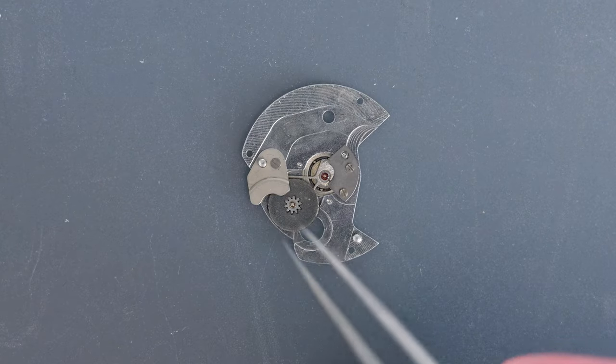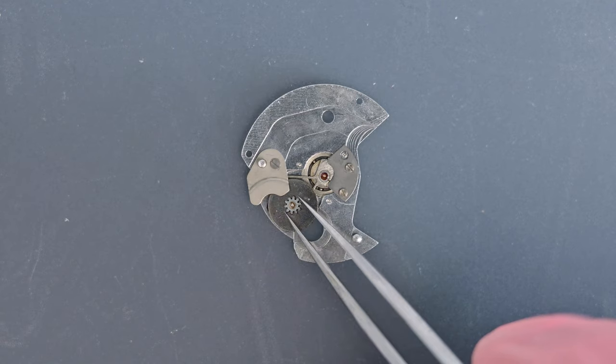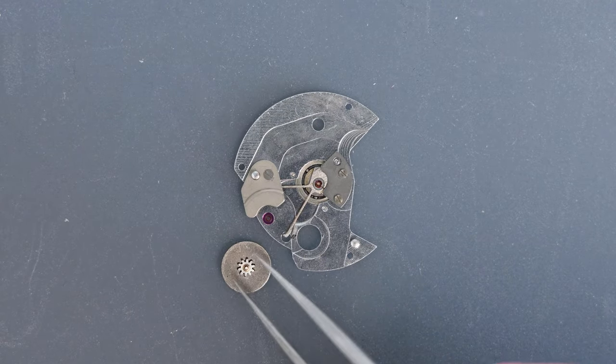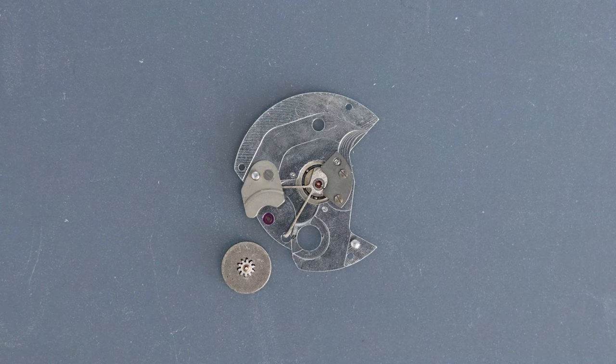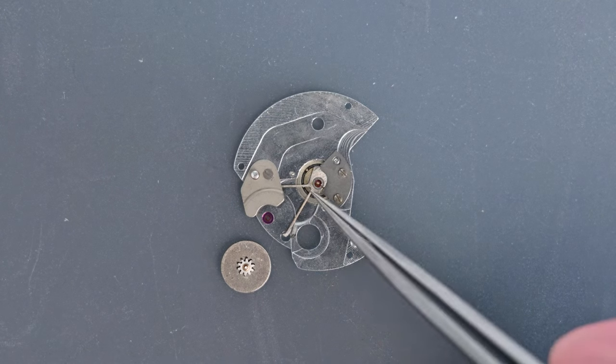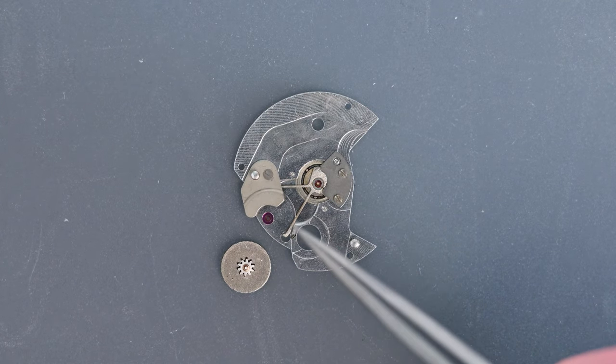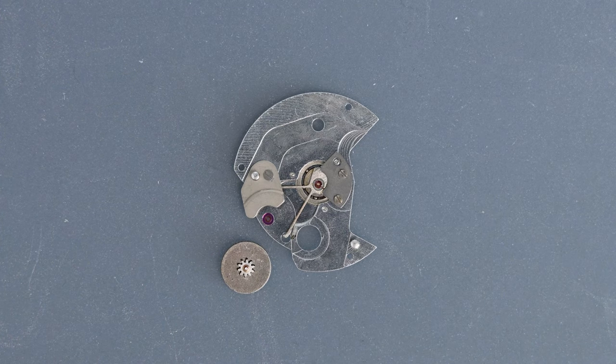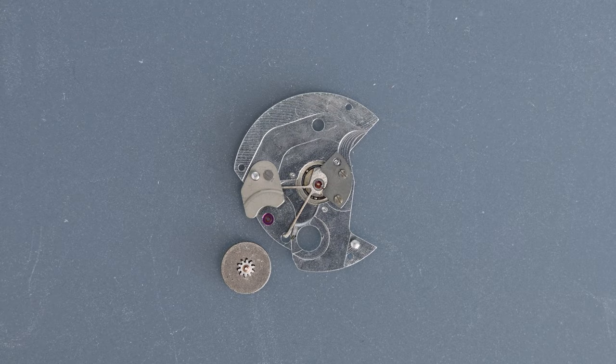This wheel here is the transmission wheel. It transmits the rotational motion of the winding rotor through to the barrel, winding the mainspring. This part here is the pawl lever. And so these two parts together are the functional components of this auto-winding mechanism.